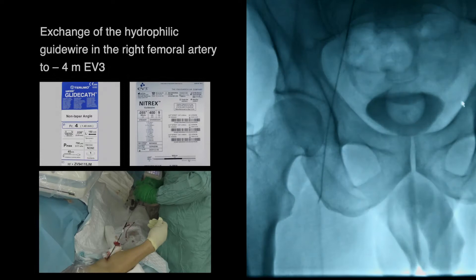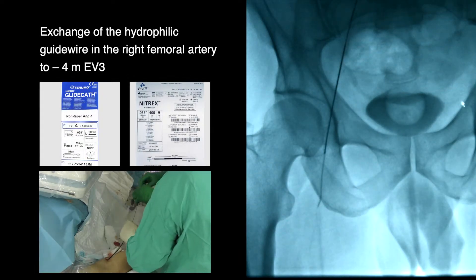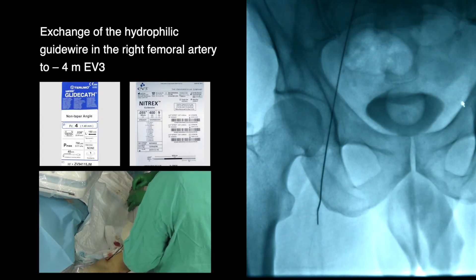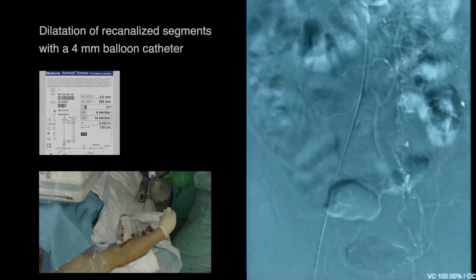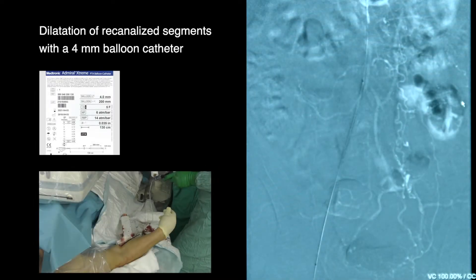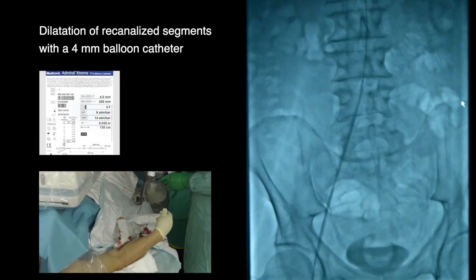Exchange of the hydrophilic guide wire in the right femoral artery to a 4-meter long EV3 wire. Dilatation of the re-canalized segments performed with a 4 mm balloon catheter.